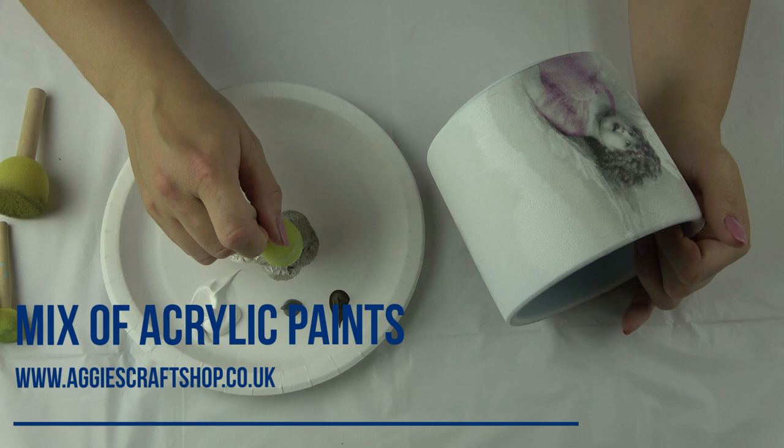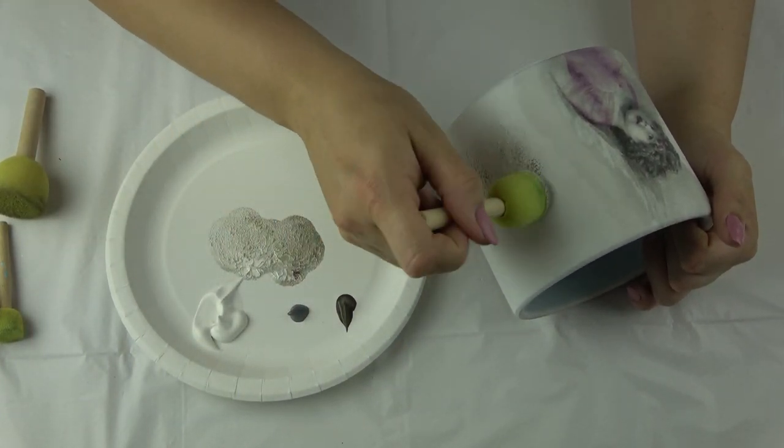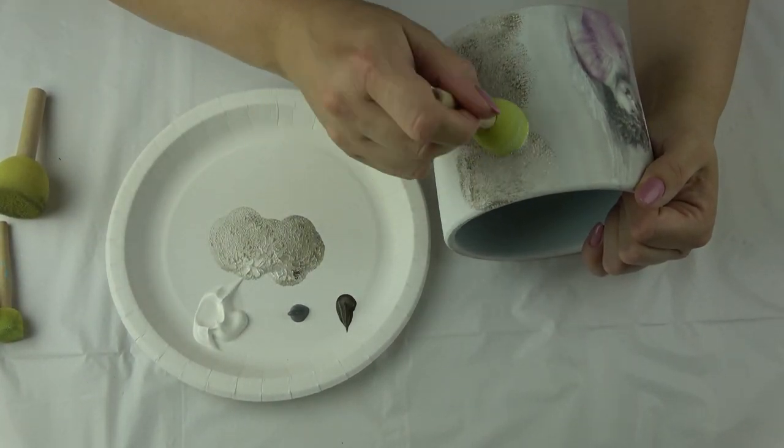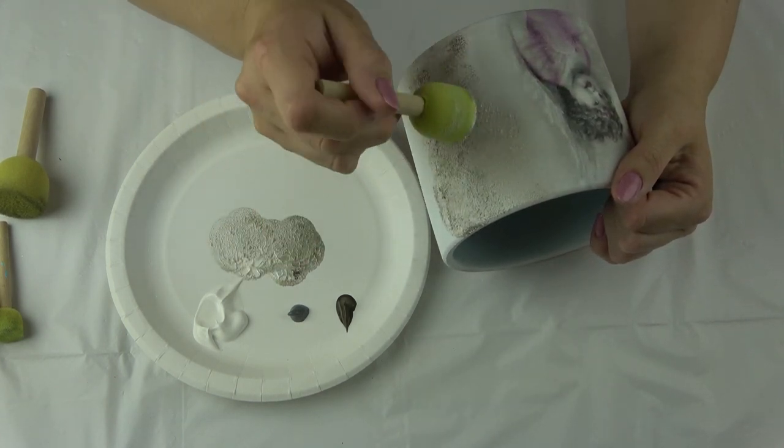When everything is dry I apply mixture of paint around my images to blend edges. Try to tape little bit of paint on your sponge and some water if needed and work your way towards the picture.